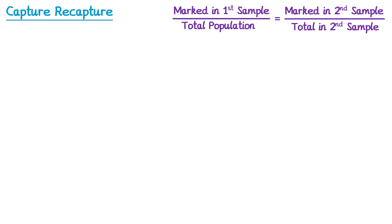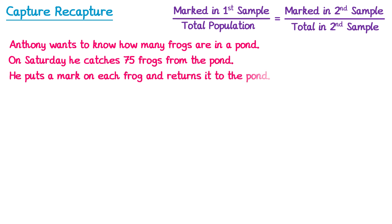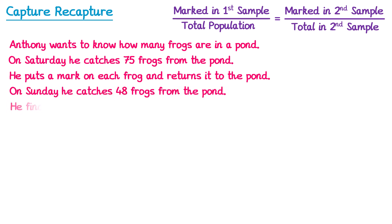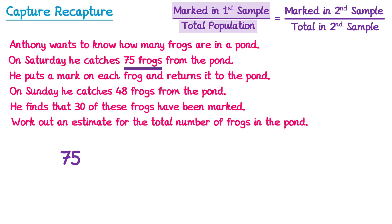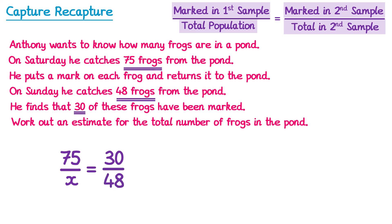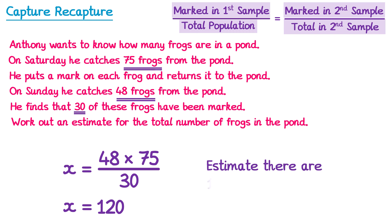Second example: Anthony wants to know how many frogs are in a pond. On Saturday he catches 75 frogs, marks them, and returns them. On Sunday he catches 48 frogs and finds 30 have been marked. Using the formula: 75 over x equals 30 over 48. This time we use the reciprocal method — take reciprocals, then multiply both sides by 75, giving x equals 48 times 75 over 30. Typing this into a calculator gives x equals 120, so we estimate there are 120 frogs in the pond.